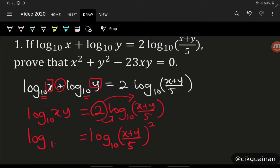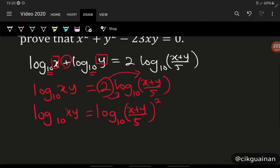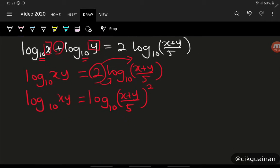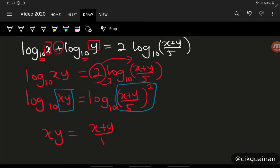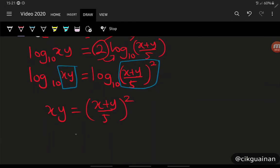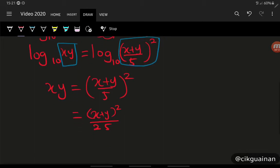We just rewrite the left hand side, so now we have log(something) equals log(something). We can compare both sides: xy equals ((x+y)/5)², which gives us xy equals (x+y)²/25.